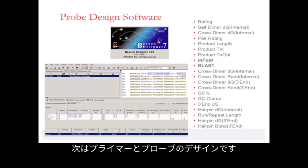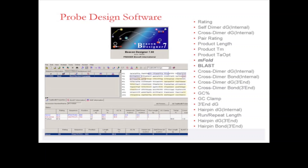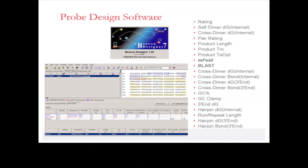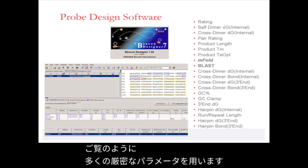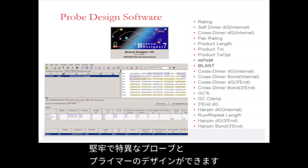Regarding the design of primers and probes: for a successful qPCR design, good primers and probes are essential. There are a number of software tools that can be used to design these. We use the software called Beacon Designer, which uses a number of stringent parameters — including mFold and BLAST — for the design of robust and specific probes and primers.